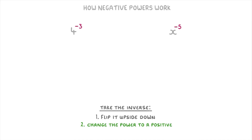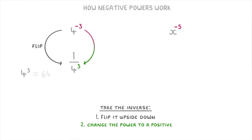So for 4 to the power of negative 3, we just flip it upside down by doing 1 over 4, and then make the power of negative 3 a positive 3, so that we end up with 1 over 4 cubed. Then because 4 cubed is 64, we can rewrite our answer as 1 over 64.